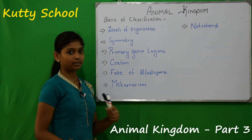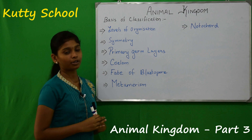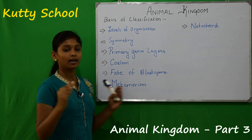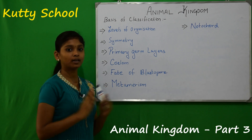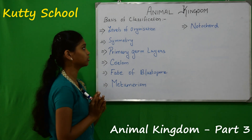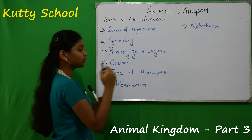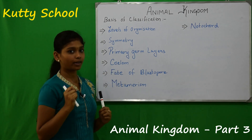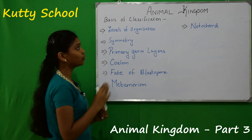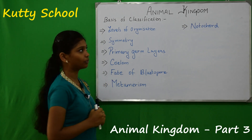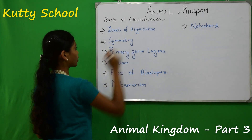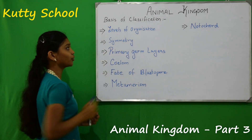First, let's discuss the correct order. The organization goes: cells, tissues, organ, organ system. Let's classify the order and see how many levels are classified. There are levels of organization.